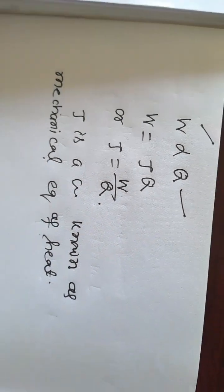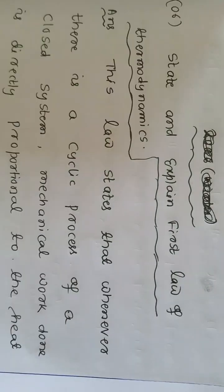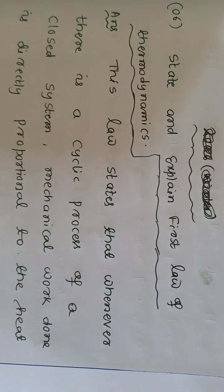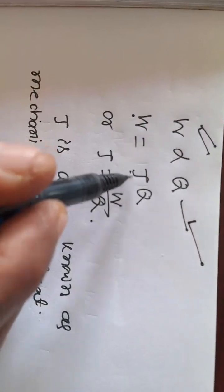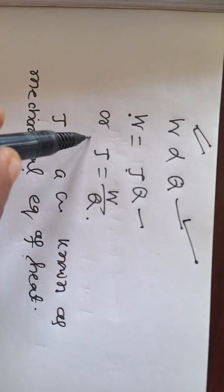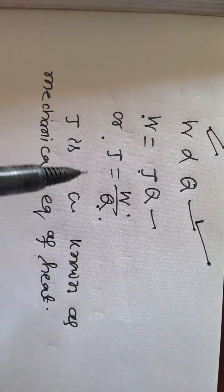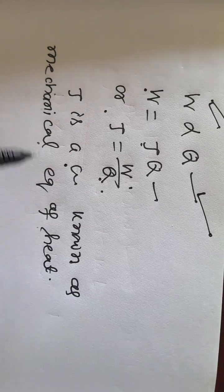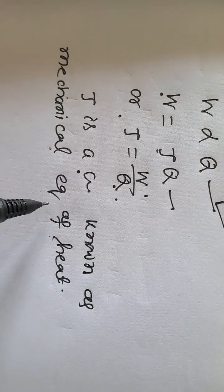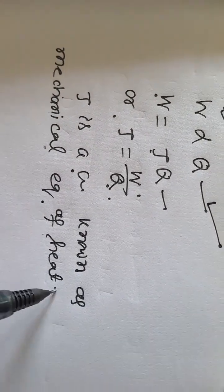To restate: the first law of thermodynamics states that whenever there is a cyclic process of a closed system, mechanical work done is directly proportional to the heat transfer. That is, W is equal to JQ, or J is equal to W by Q, where J is a constant known as the mechanical equivalent of heat.